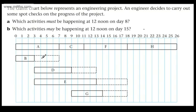D has a float of four. E has a float of five. And G has a float of four.